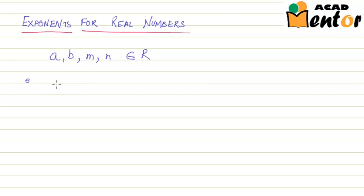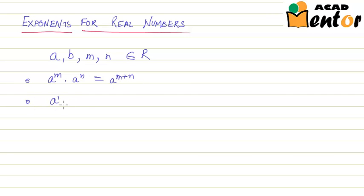The first property is: a to the power m, multiplied by a to the power n, is always equal to a to the power m plus n. The second one is: a to the power m upon a to the power n is equal to a to the power m minus n.